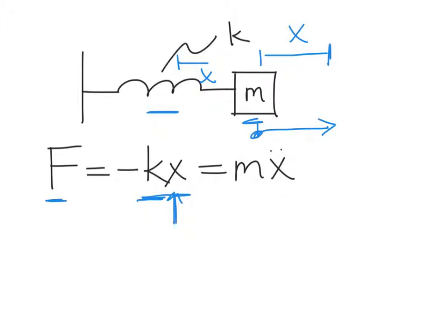If we compress the spring, we push it to the left here, then x will be negative, and therefore the force will be positive, meaning it's going to push it back toward positive x, or back toward equilibrium. And so this is the essence of Hooke's Law.